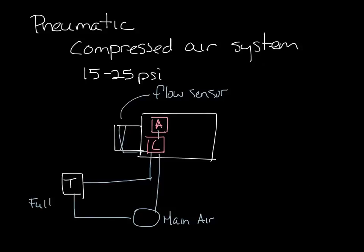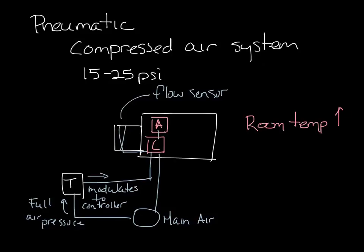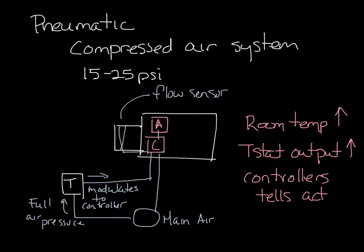The thermostat receives full air pressure from the main supply air. And it modulates the output pressure that goes to the controller to tell the controller whether it needs to open or close the damper. So when the room sensor senses an increase in temperature, the thermostat output pressure increases as well to the controller, which tells the controller to open the damper and supply more air to the space.